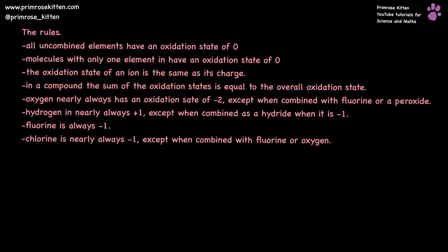The oxidation state of an ion is the same as its charge. In a compound, the sum of the oxidation states is equal to the overall charge. Oxygen is nearly always an oxidation state of minus two, except when combined with fluoride or in a peroxide. Hydrogen is nearly always plus one, except when it is in a hydride, when it is minus one. Fluorine is nearly always minus one. And chlorine is nearly always minus one, except when combined with fluorine or oxygen.